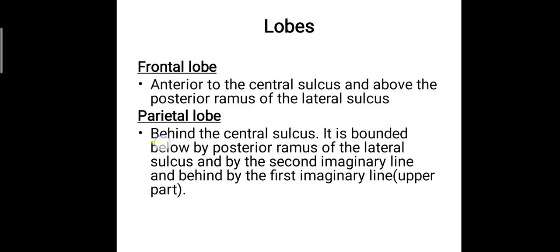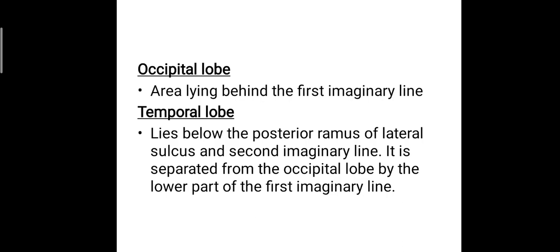The parietal lobe lies behind the central sulcus, bounded below by the posterior ramus of the lateral sulcus and by the second imaginary line, and behind by the first imaginary line. The occipital lobe is the area lying behind the first imaginary line. We have seen how the imaginary lines are formed and how they separate the lobes.